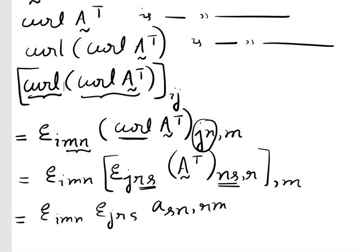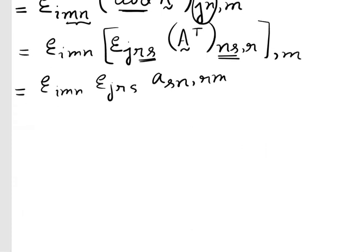In the next step we will combine. We combine epsilon IMN as is with epsilon JRS. Note that differentiation with respect to R then M, or M then R, is the same — so we can reverse them. Thus we write epsilon IMN epsilon JRS, A_SN comma M R. We have just reversed the differentiation order; these two steps are the same.